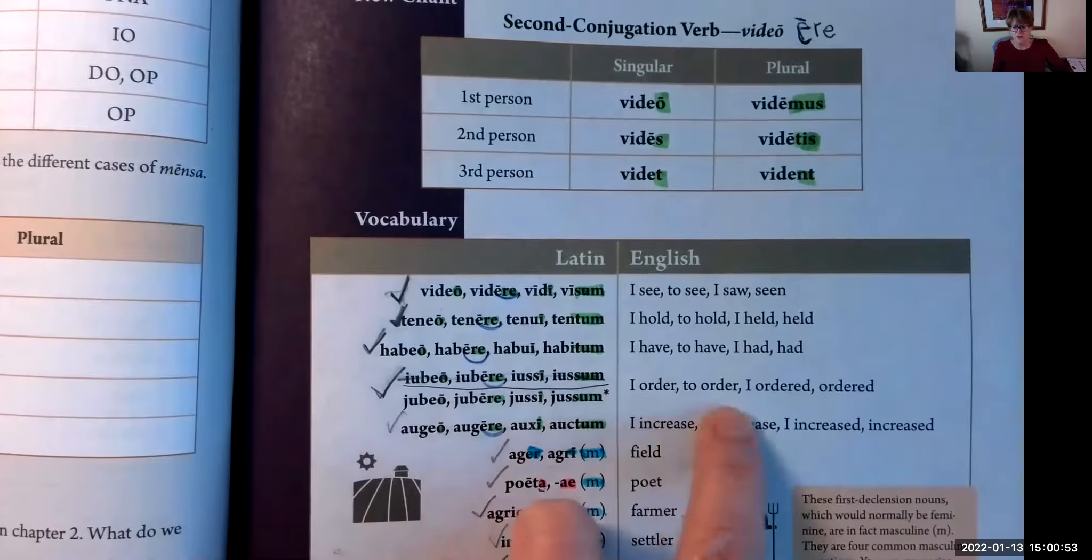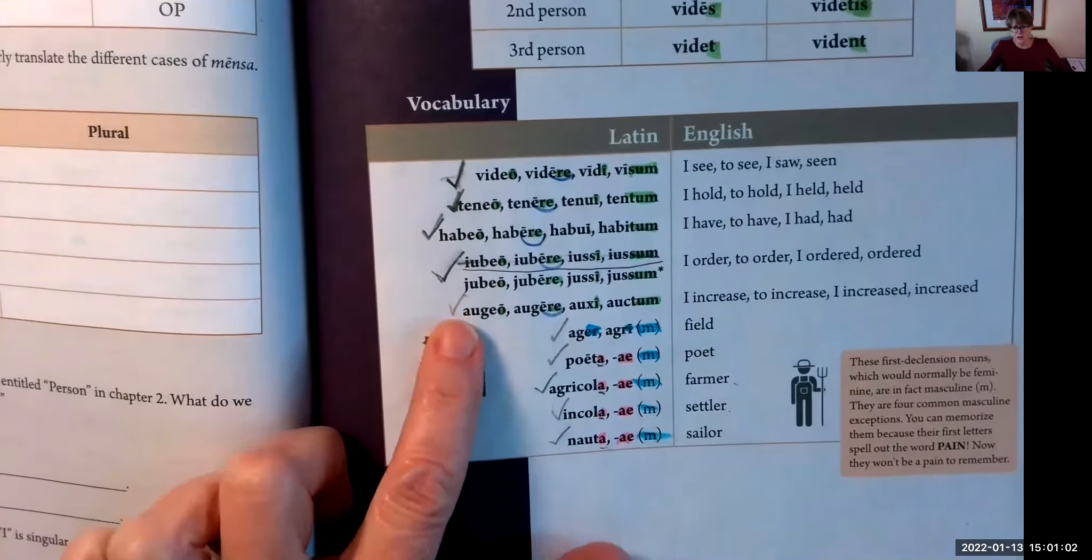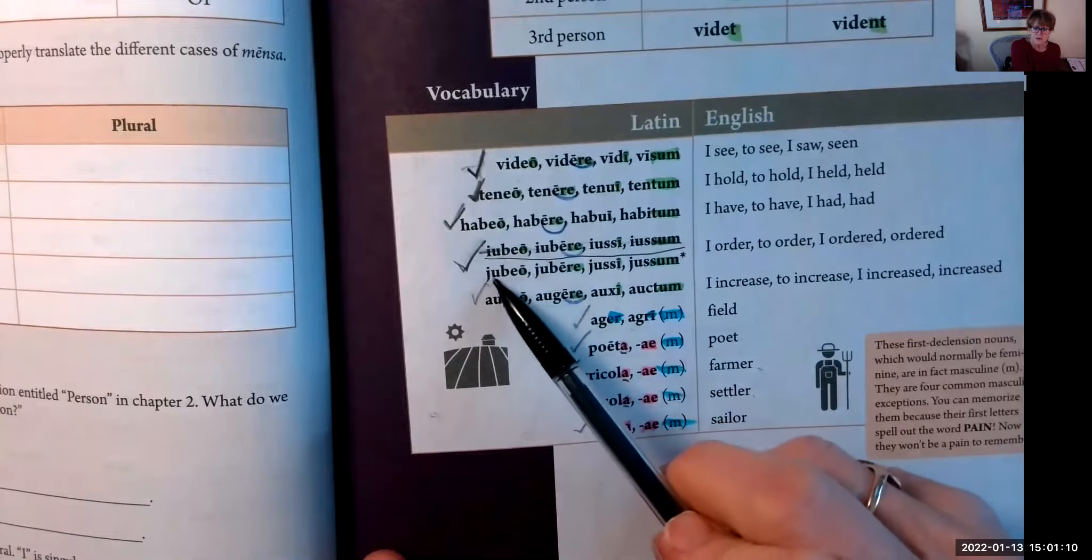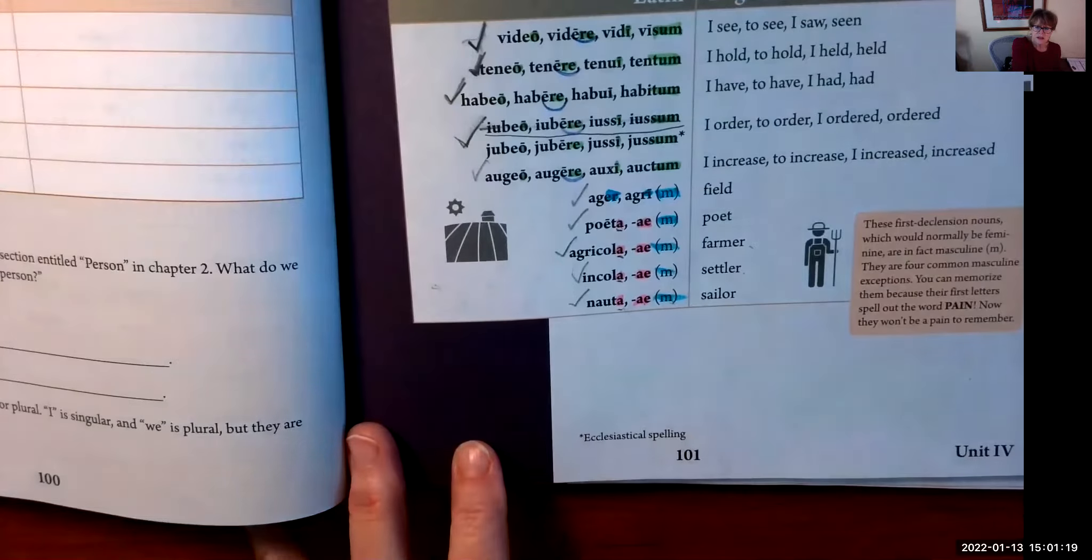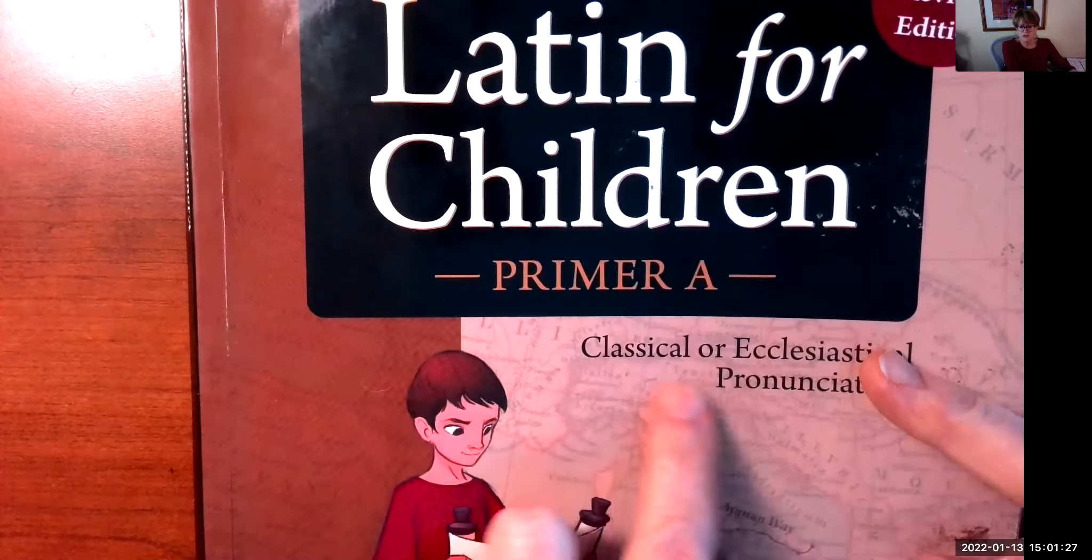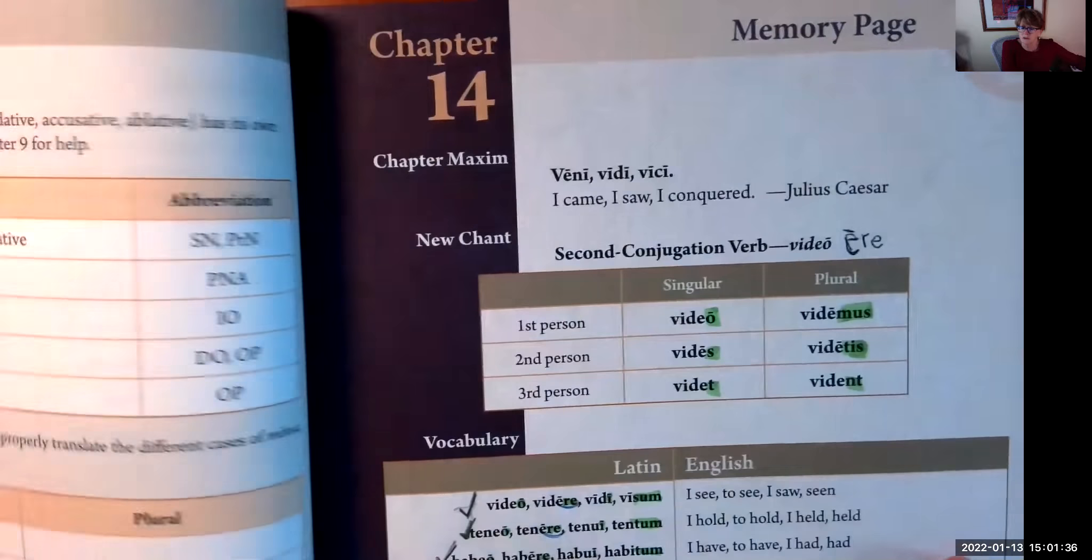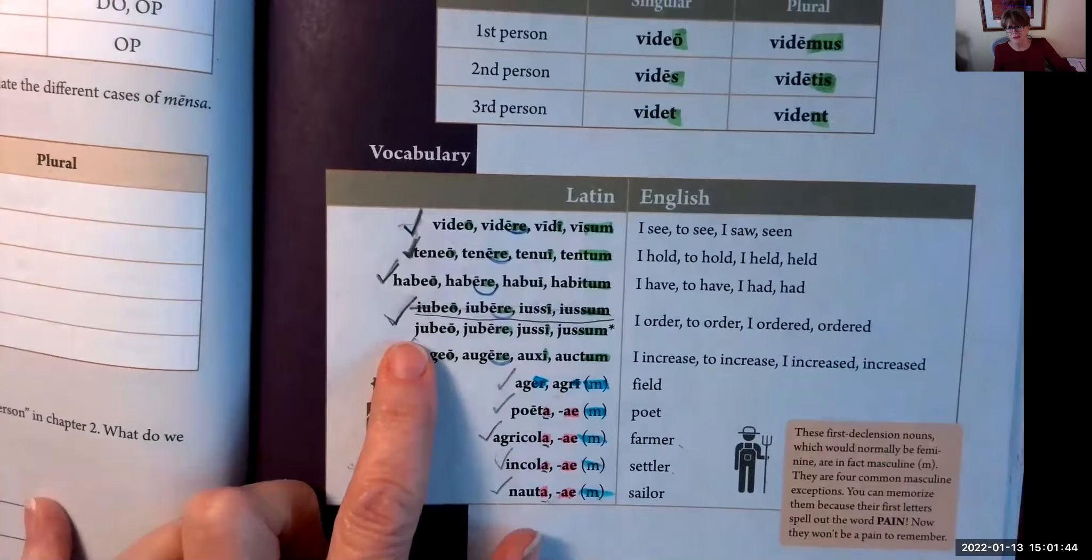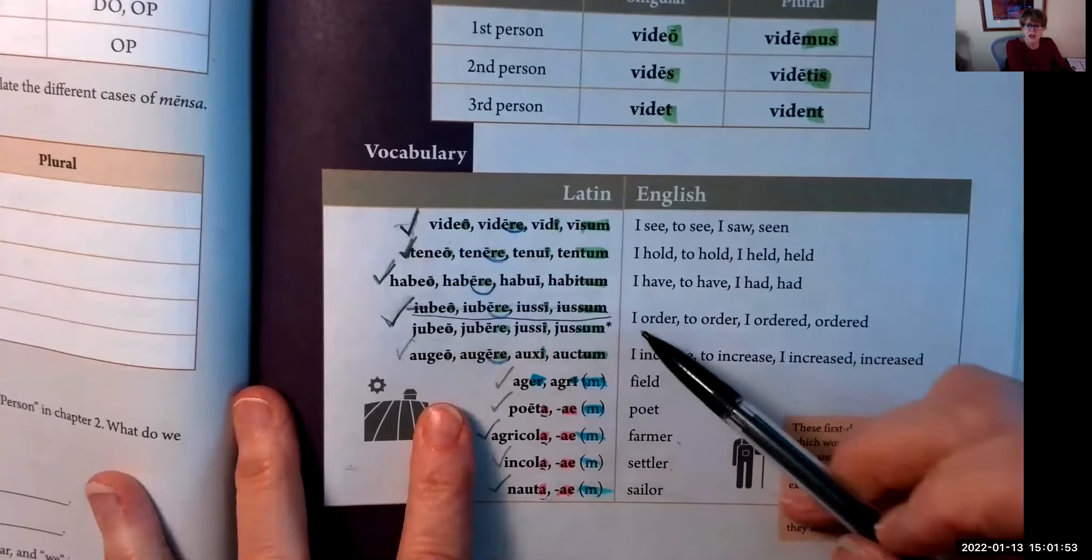Let's go back to our vocab list. Habeo, habere, habui, habitum - I have, to have, I had, had. Iubeo, iubere, iussi, iussum - I ordered, to order, I ordered, ordered. I want you to pay attention that there are two spellings of this word, and there's a little asterisk right here. Good question. Right down here, look at the asterisk: this is the ecclesiastical spelling.